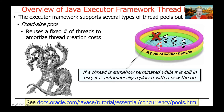If a thread terminates — for example, due to an unhandled exception — the fixed-size thread pool is smart enough to detect that and respawn another thread to keep the number of threads in the pool constant. You can think of it like the hydra from Greek mythology: if you cut off a head, another one grows back. The point is that threads that terminate are replaced.